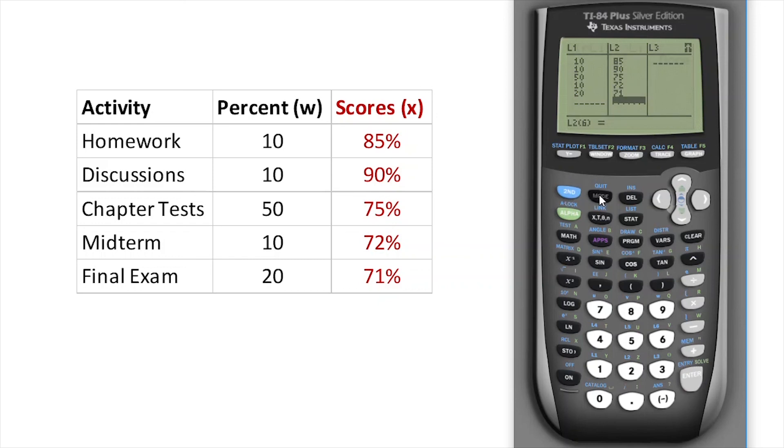Now remember, I've got to remember the weights are in List 1 and the scores are in List 2. So I'm going to go Second Quit to get me back to the home screen, and then I want to hit Stat. I'm going to scroll over to Calc and choose one variable Statistics. This opens up my Stat Wizard. My list, or the X scores, that's not in List 1 - that's in List 2. And the frequencies, or the weights, they are in List 1. So I have to remember where I put things, and I'm going to come down here to Calculate. And you can see it's got my score for me of 76.4.